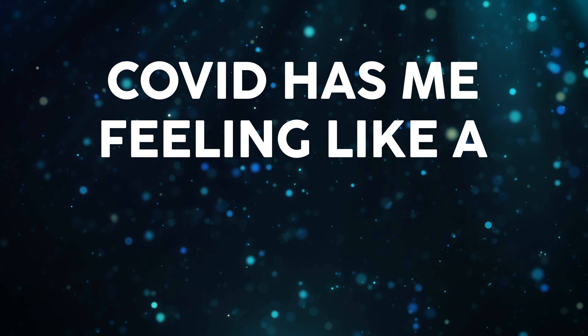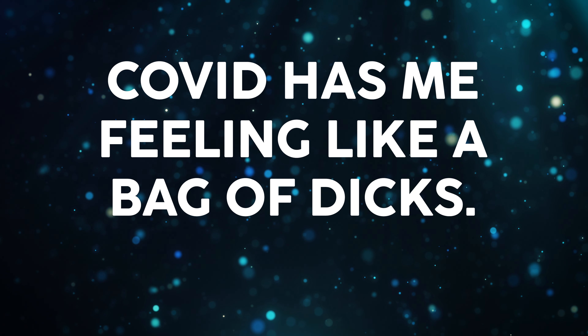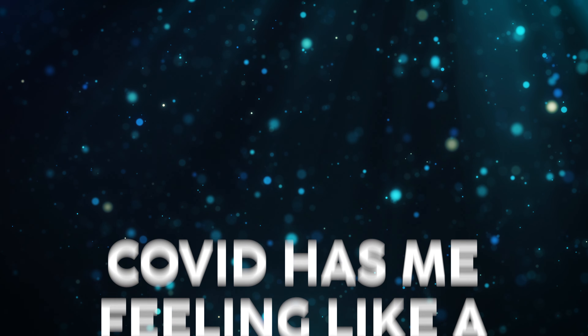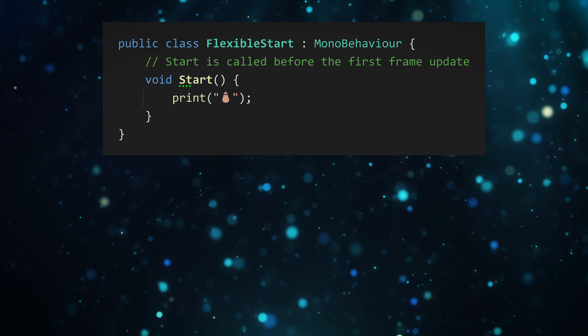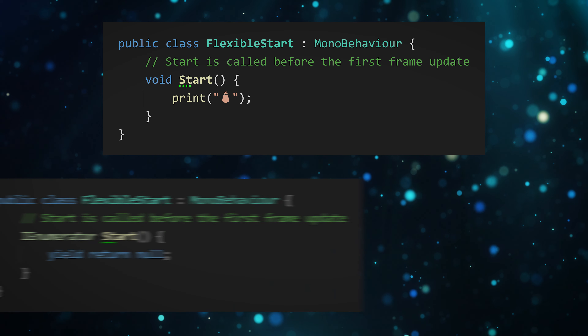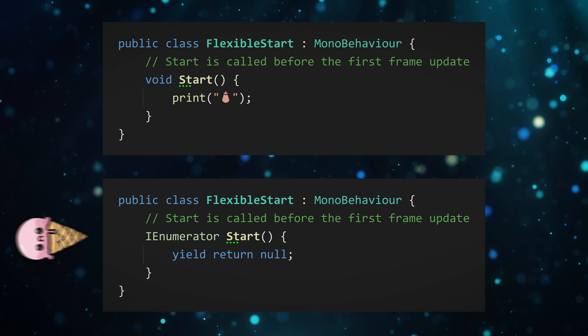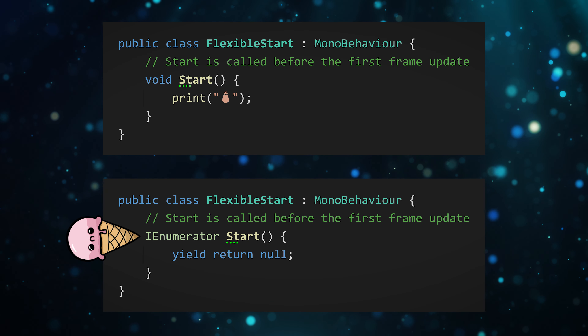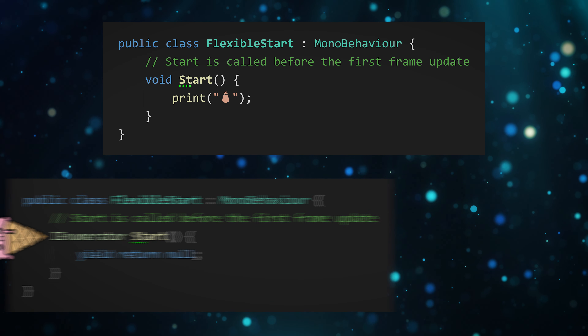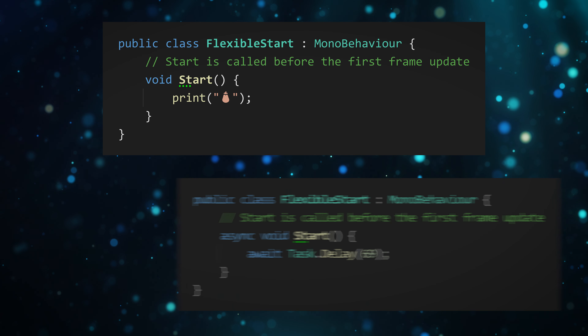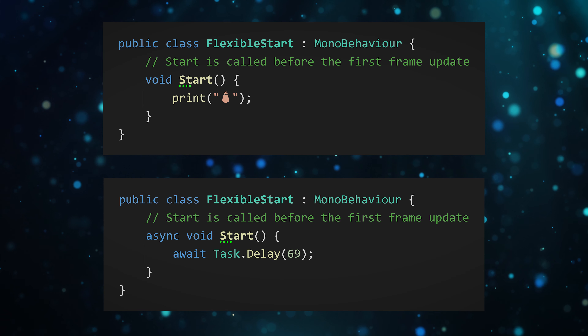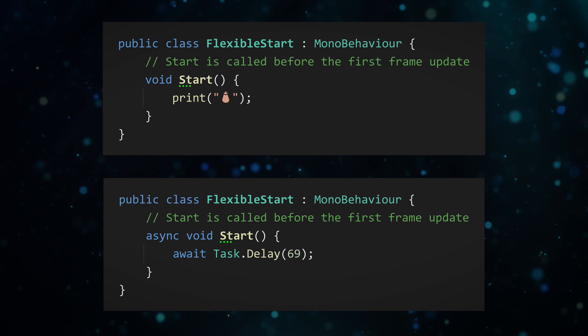Covid has me feeling like a bag of dicks, but how are you? Did you know the Start method can actually be a coroutine? Unity is smart enough to call it properly for you. It can also be an async method if that's more your style.